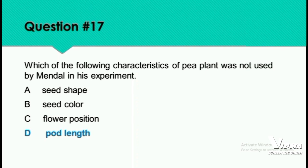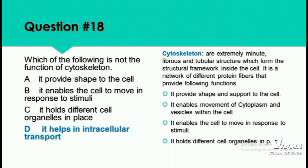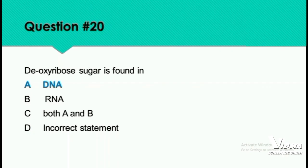Question 18: Which of the following is not a function of the cytoskeleton? The options are DNA, RNA, both A and B, or incorrect statement. The right answer is DNA. DNA stands for deoxyribonucleic acid — the sugar is deoxyribose. In RNA, there is ribose sugar, whereas in DNA, there is deoxyribose sugar.